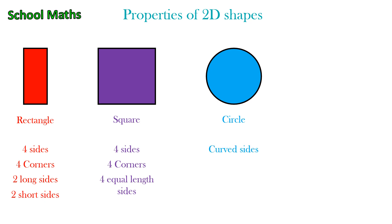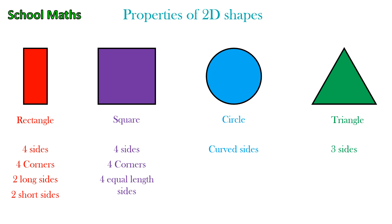The final one is triangle. Triangle has three sides, three corners and three lines of symmetry. Hope you enjoyed this video.